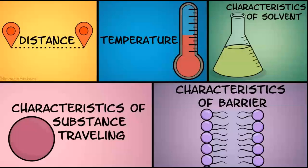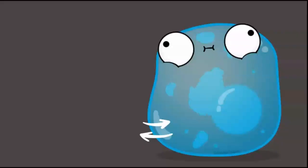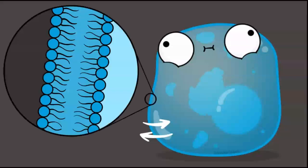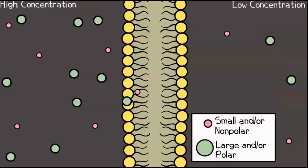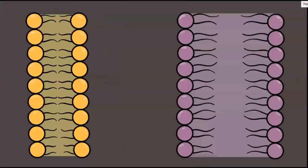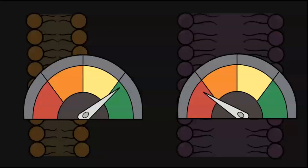Characteristics of the barrier, if diffusion is crossing a type of barrier. Let's consider diffusion across a cell where the barrier would be the cell membrane. Small nonpolar substances pass through a cell membrane easier than something large or polar — that will affect the rate of diffusion. The surface area and thickness of the cell membrane also will alter the diffusion rate. For example, a large surface area and thin membrane would generally allow a faster diffusion rate than a smaller surface area and thick membrane.